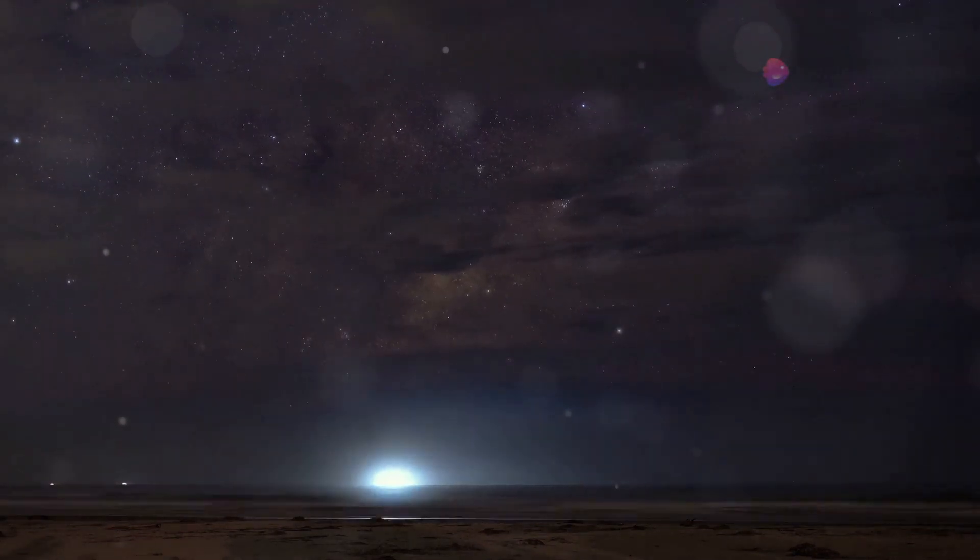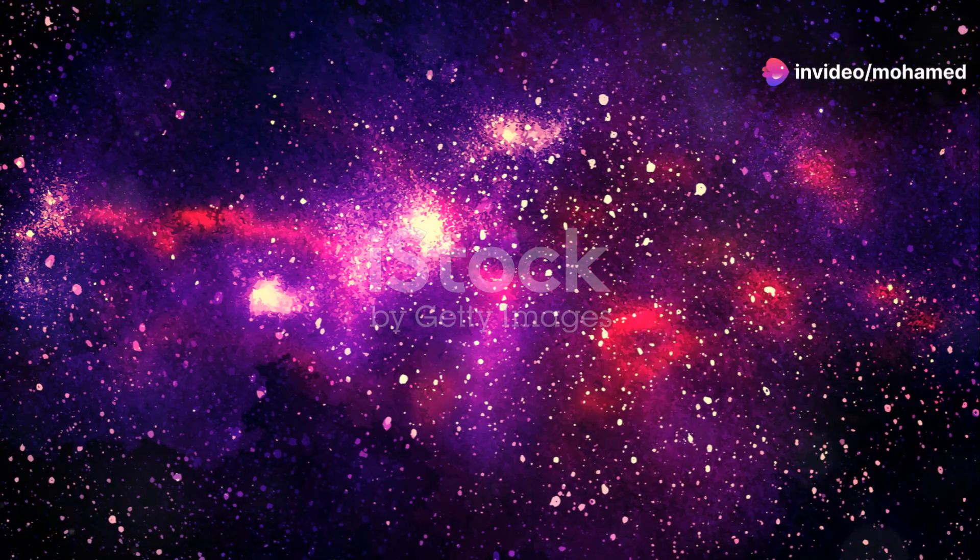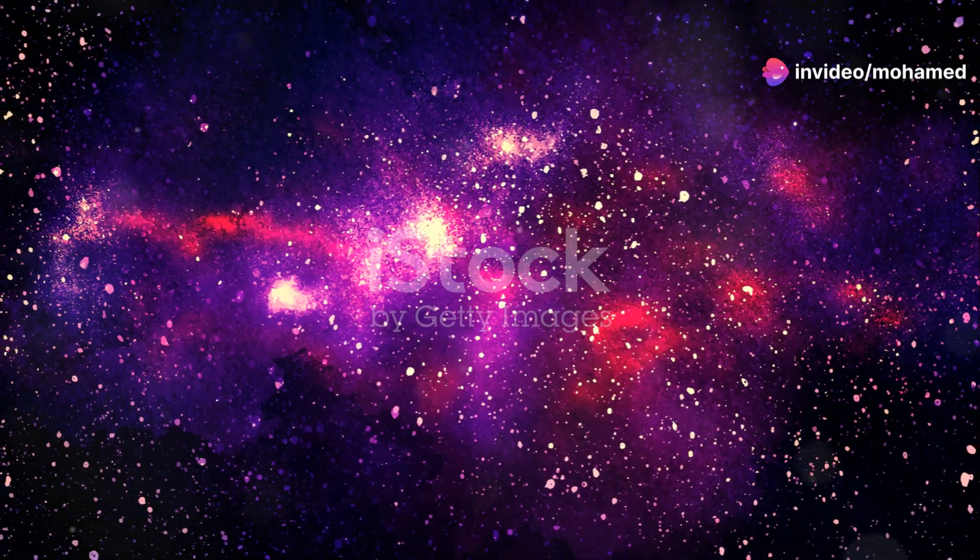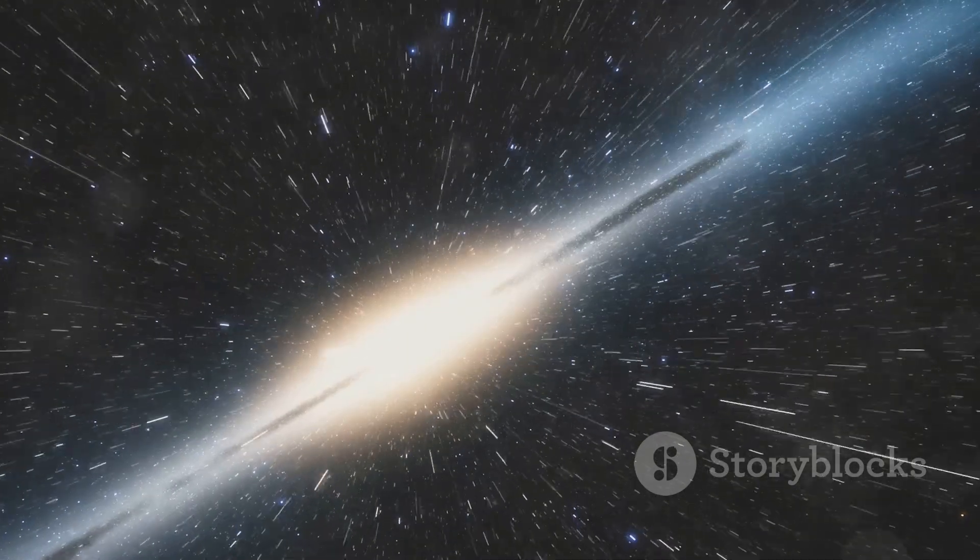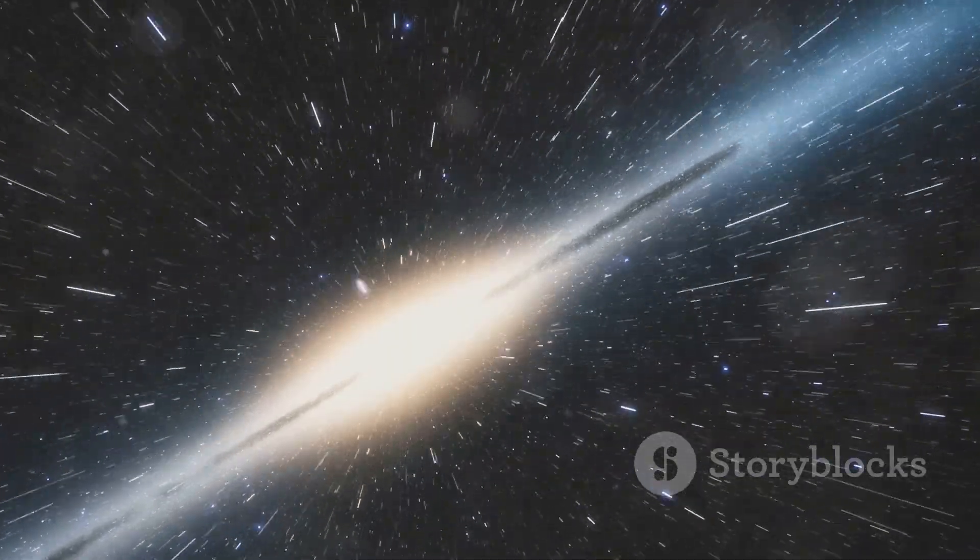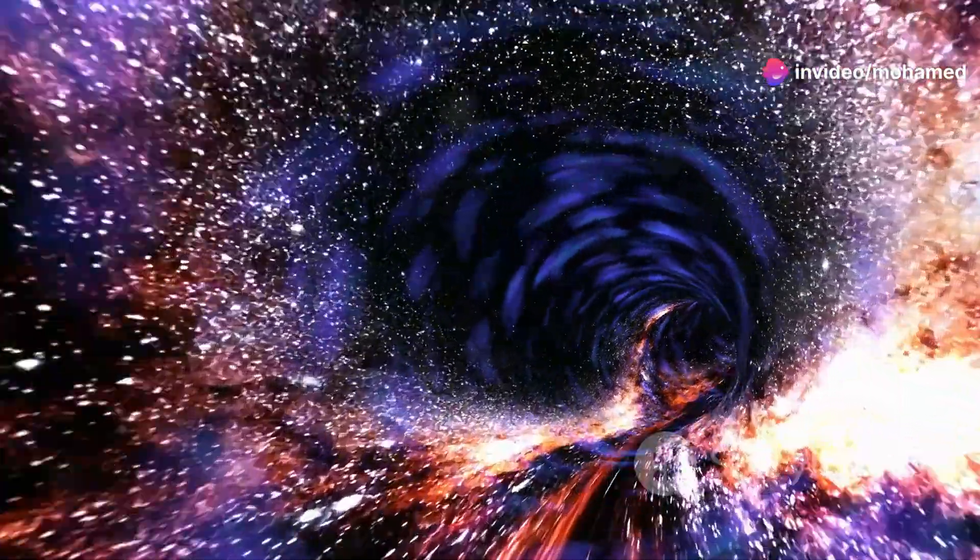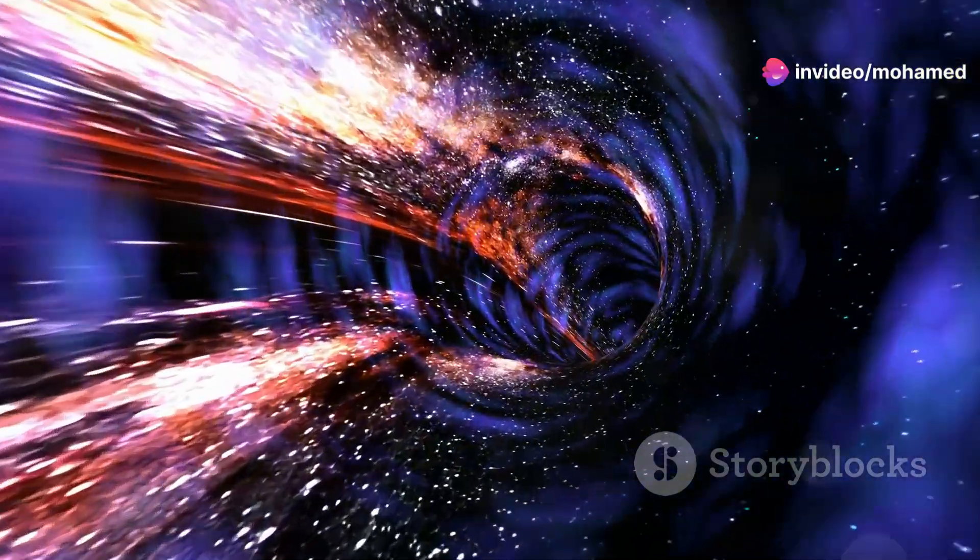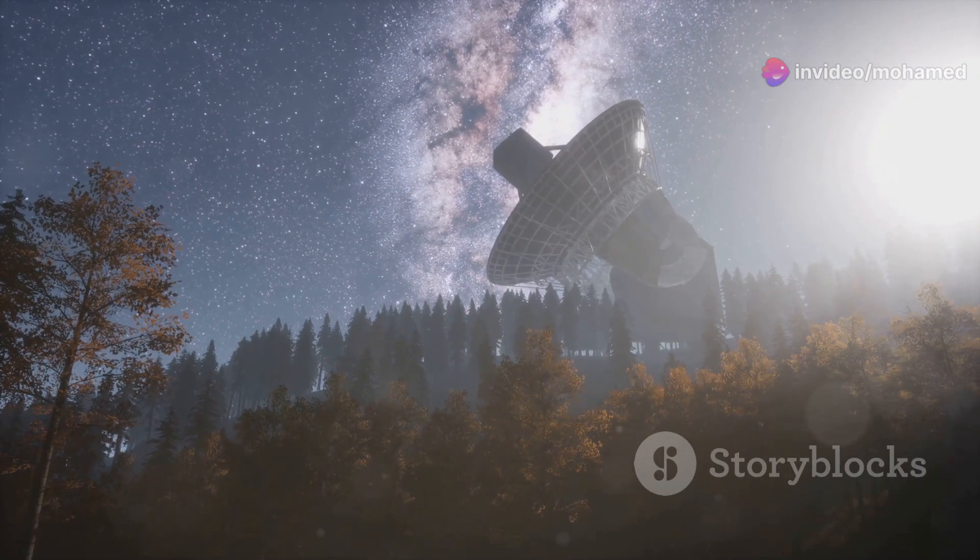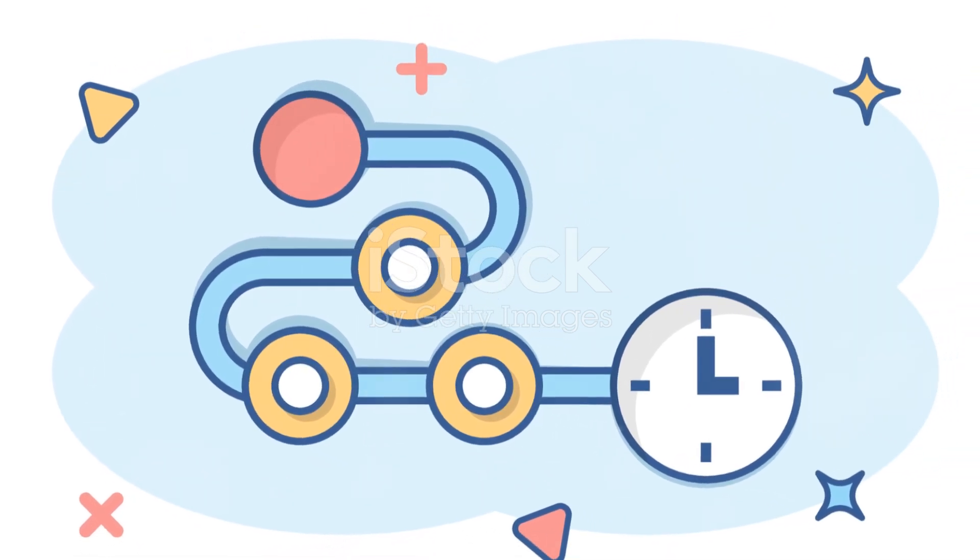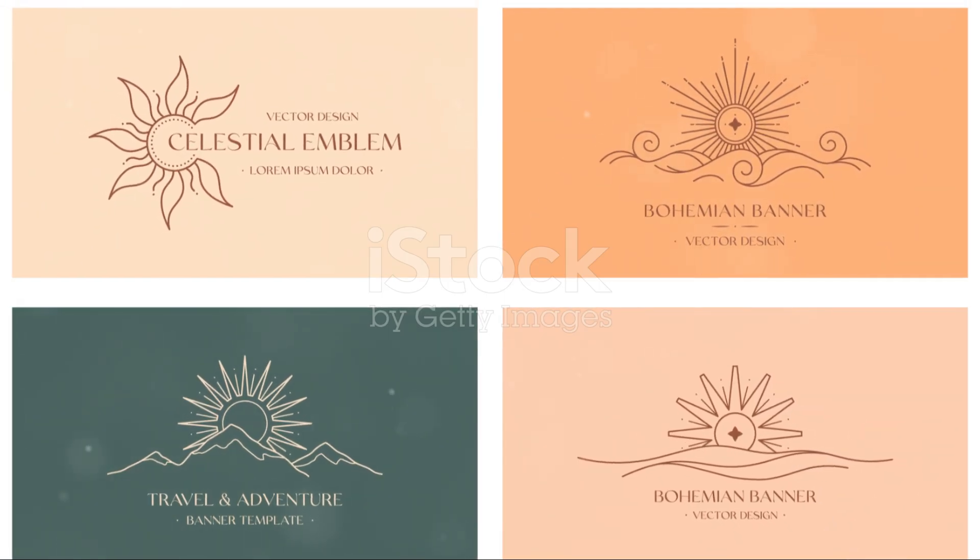Imagine standing on a beach, looking out at the horizon. Now, imagine that horizon stretches for 93 billion light-years. That's the observable universe's diameter. A light-year is roughly 5.88 trillion miles. The universe's scale is mind-boggling. Travelling at light-speed, it would take 93 billion years to cross. And that's just what we can observe. We can only see as far as light has travelled since the Big Bang. Beyond this horizon, the universe remains unseen. A tantalizing mystery.